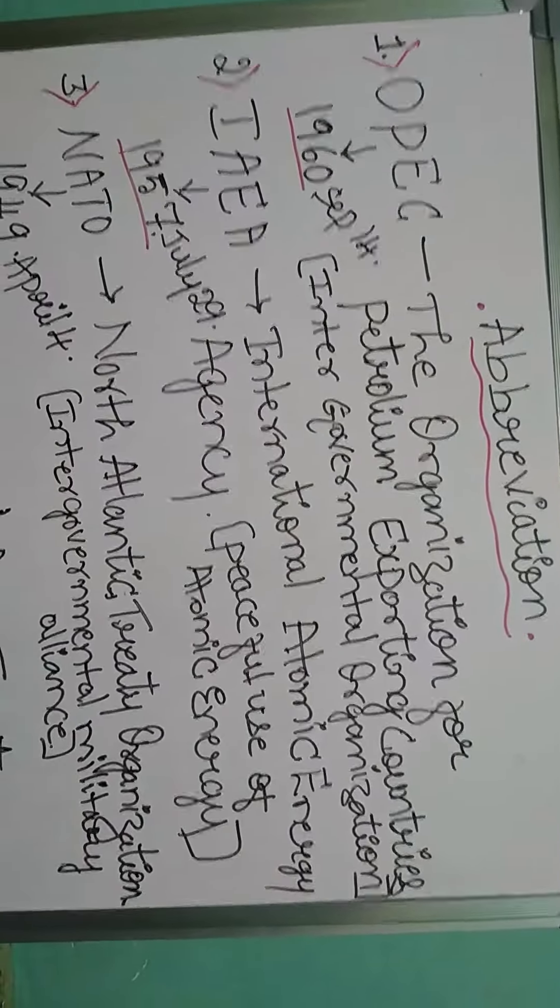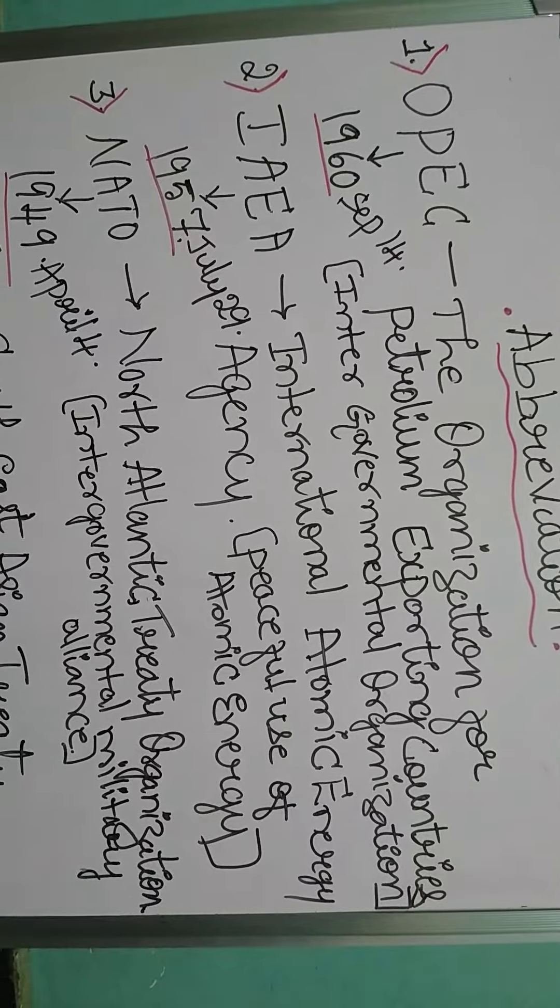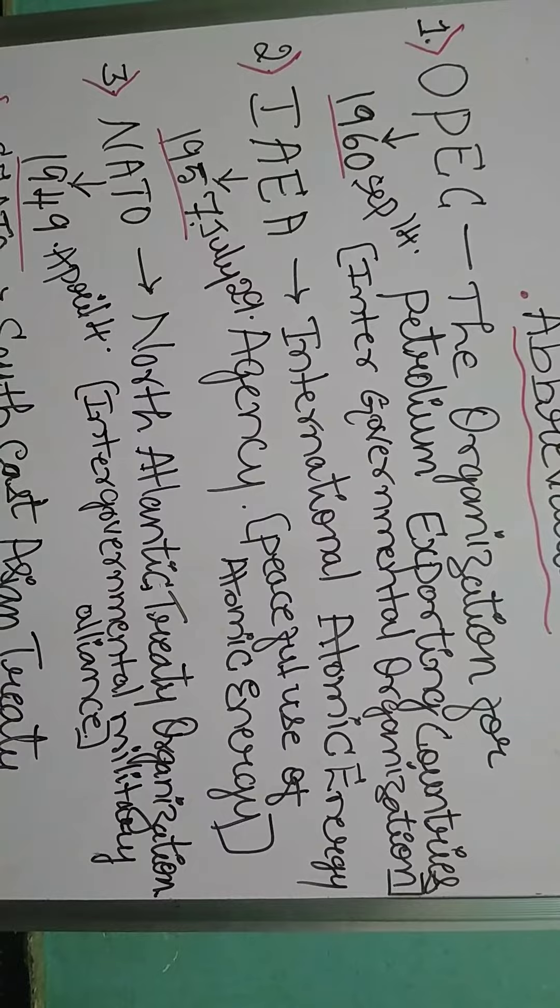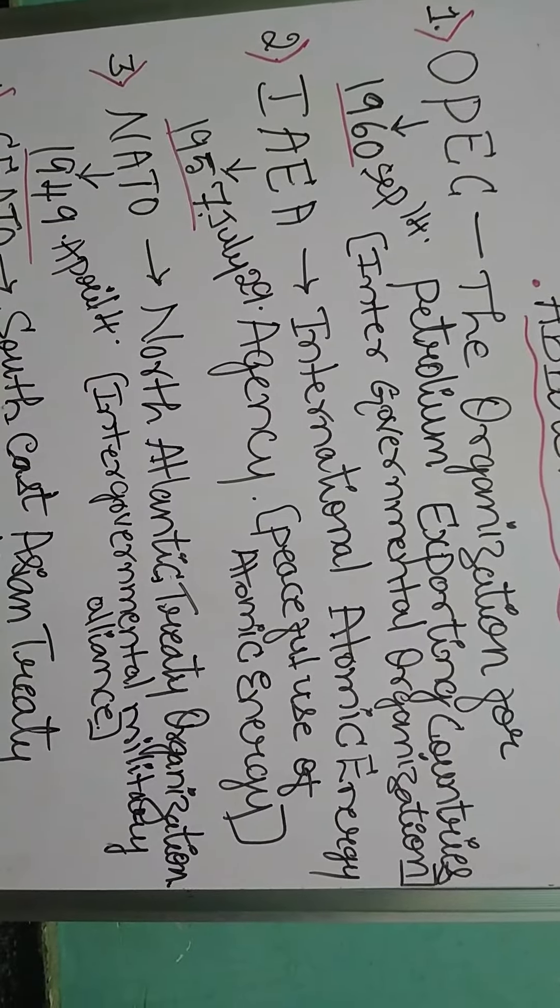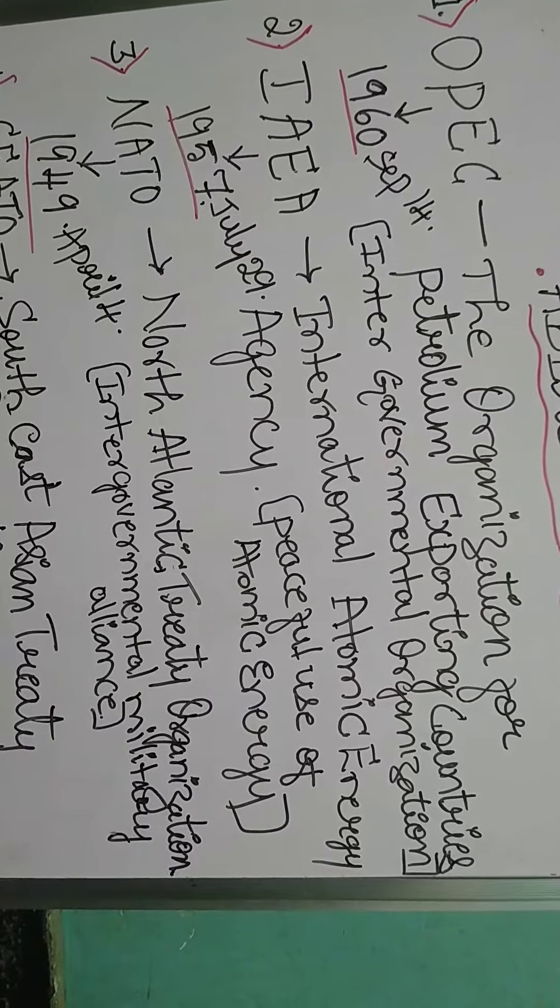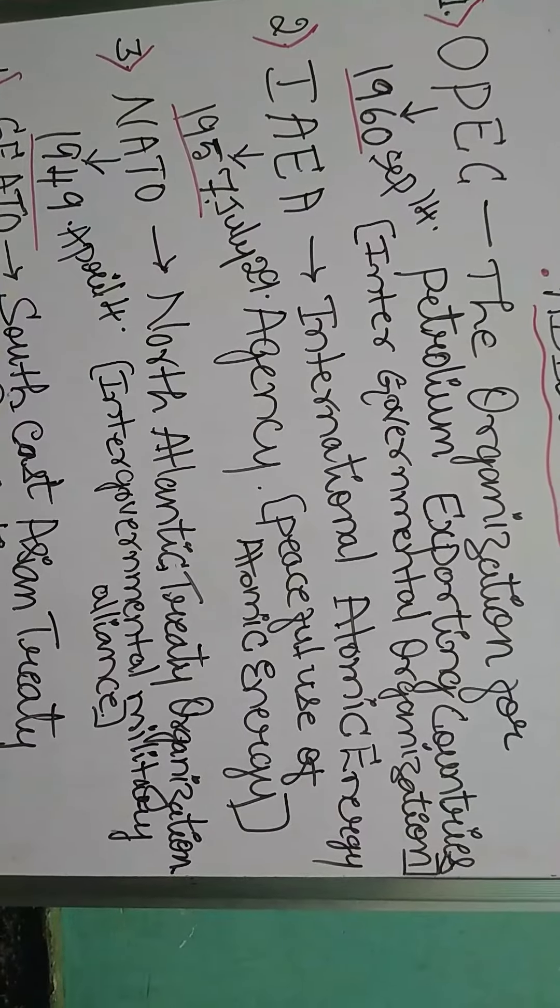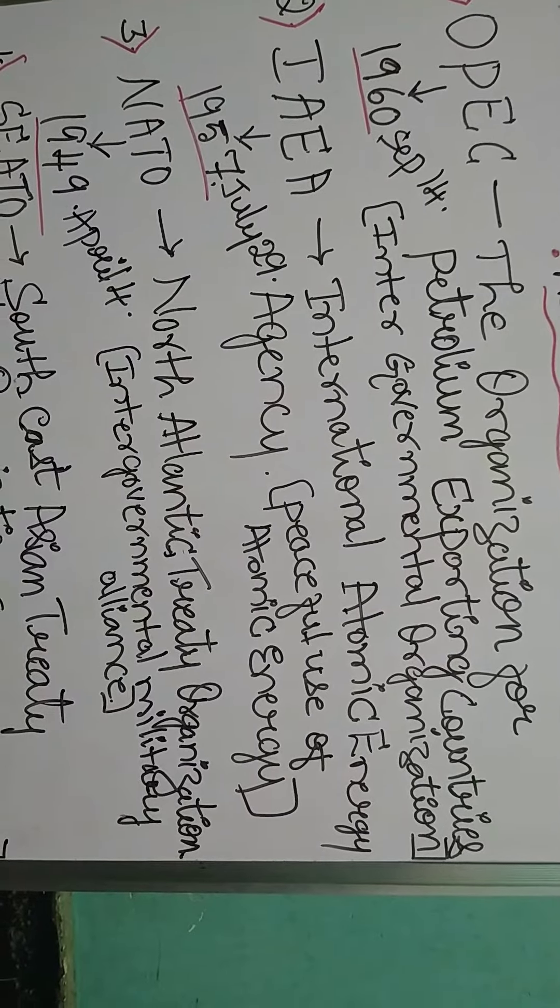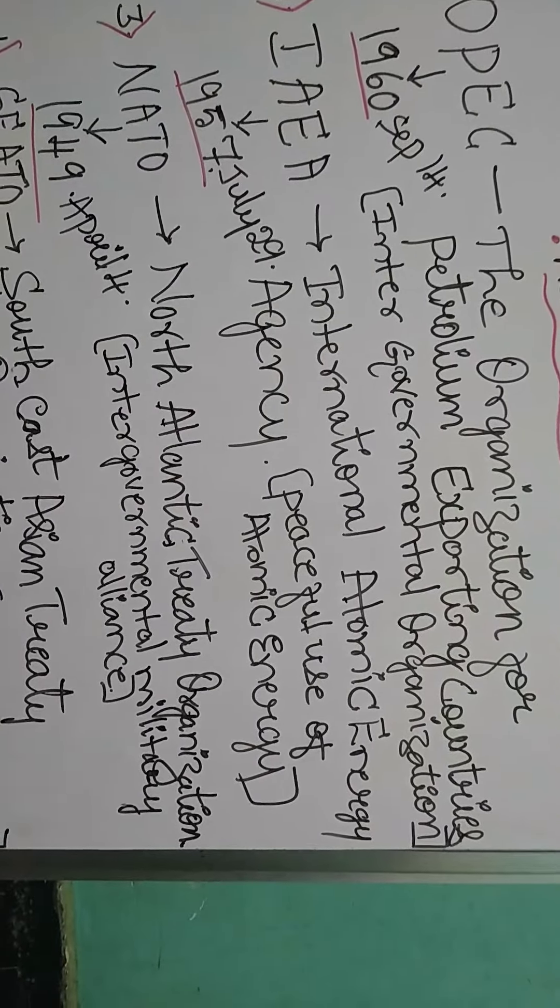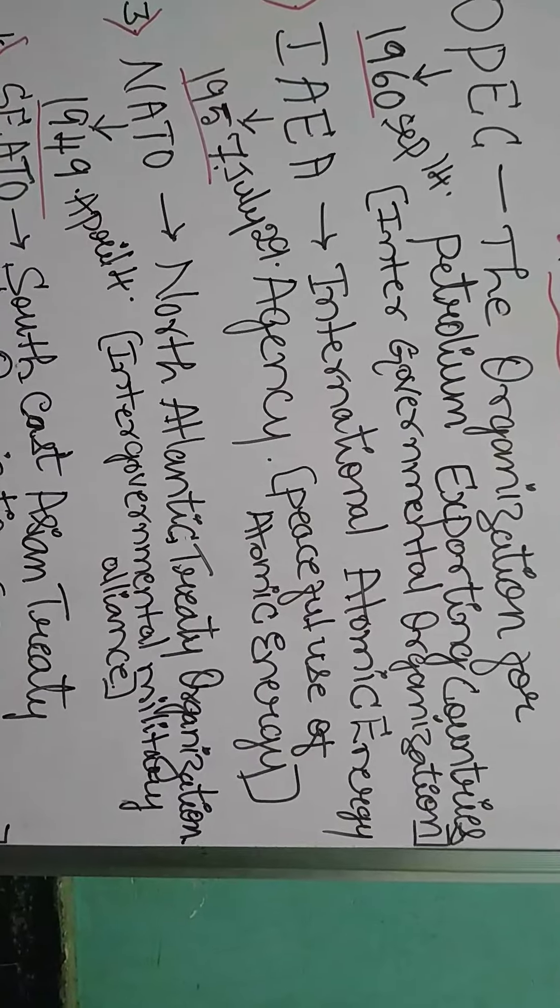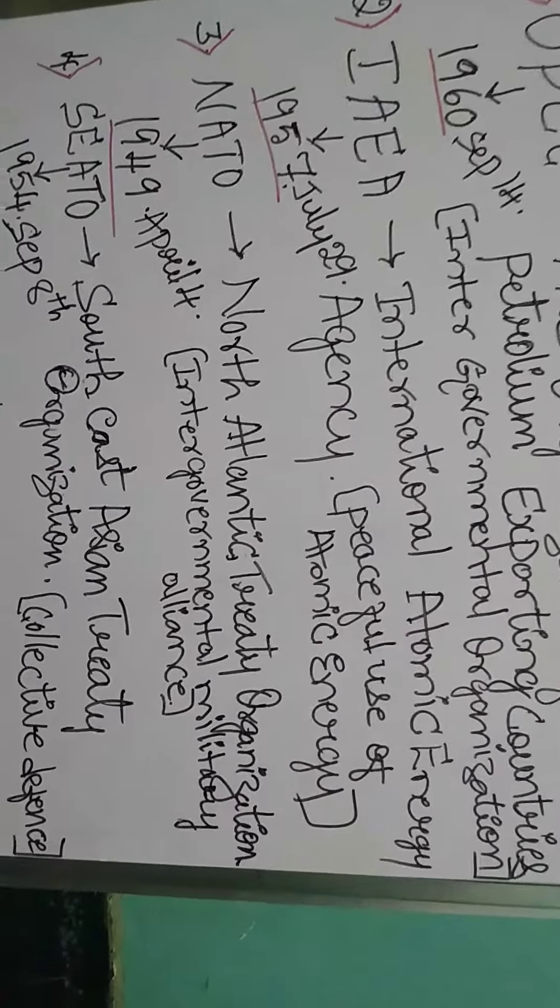Second one is IAEA, the abbreviation for International Atomic Energy Agency. It was founded on July 29th, 1957. The main importance of IAEA is the peaceful use of atomic energy.